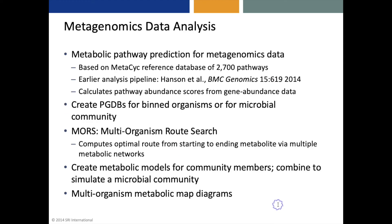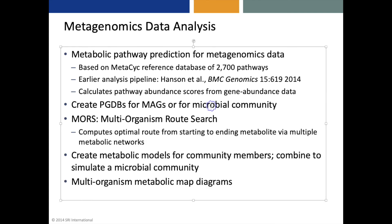There are a number of metagenomics data analysis capabilities, including performing pathway prediction for metagenomics data and calculating pathway abundance scores. The user can also create pathway genome databases for metagenome-assembled genomes or for the entire microbial community. There's also a multi-organism version of our metabolic route search tool that computes an optimal route from a starting to an ending metabolite via multiple organism metabolic networks. The software can also create metabolic models for individual members of a microbial community and combine those models to simulate the full microbial community. We can also create multi-organism metabolic map diagrams.